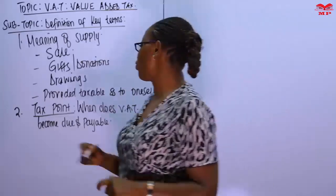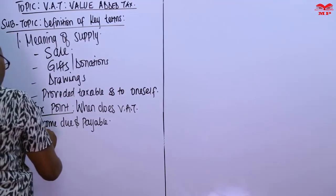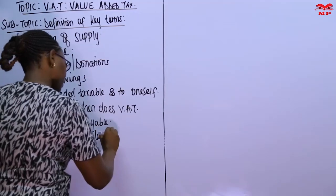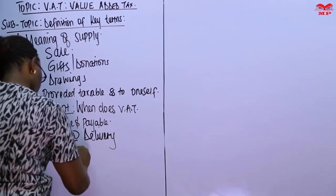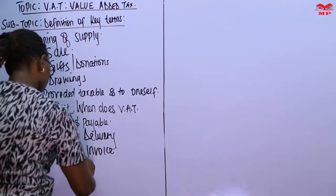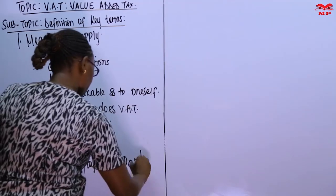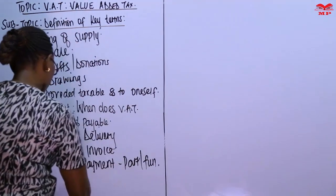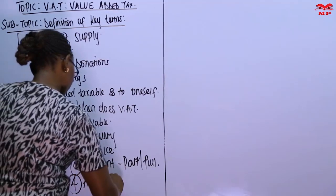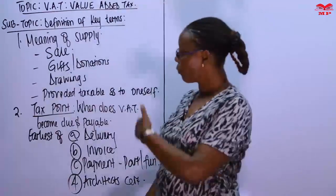VAT will be payable at the earliest of: one, delivery; two, invoice; three, payment, whether in part or in full; or four, an architect's certificate — which would be in respect of construction contracts. So let's look at those four circumstances.